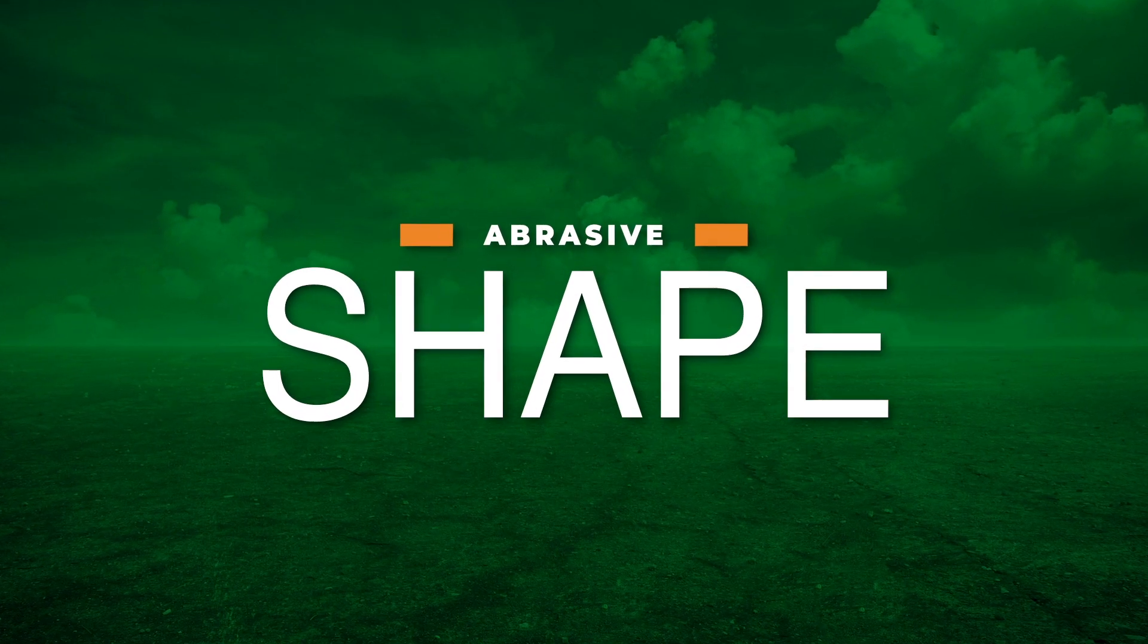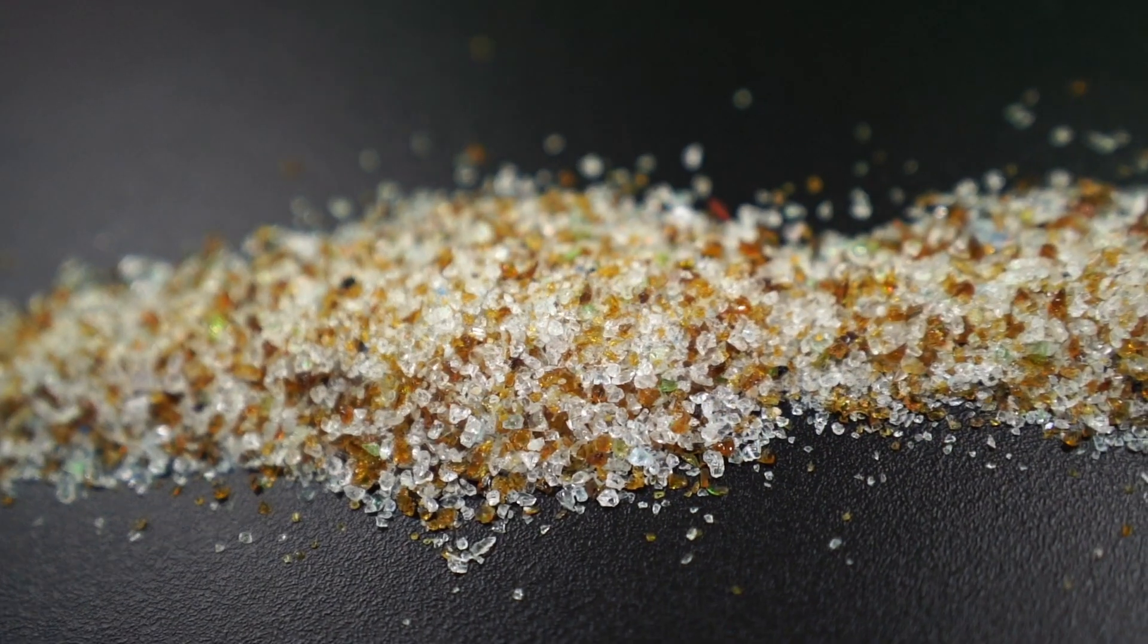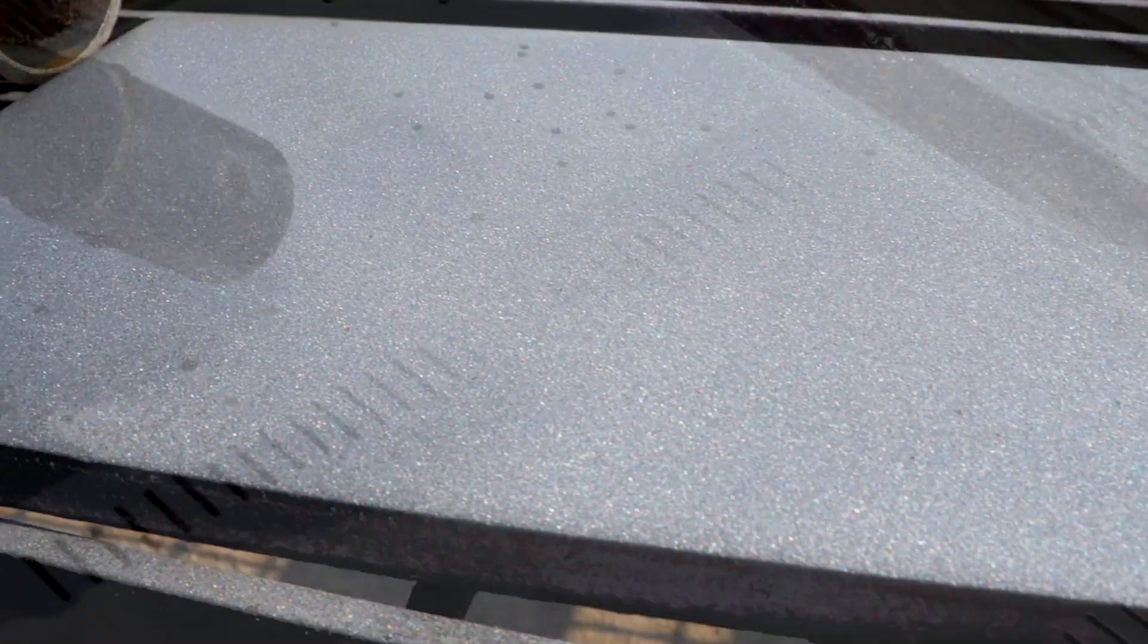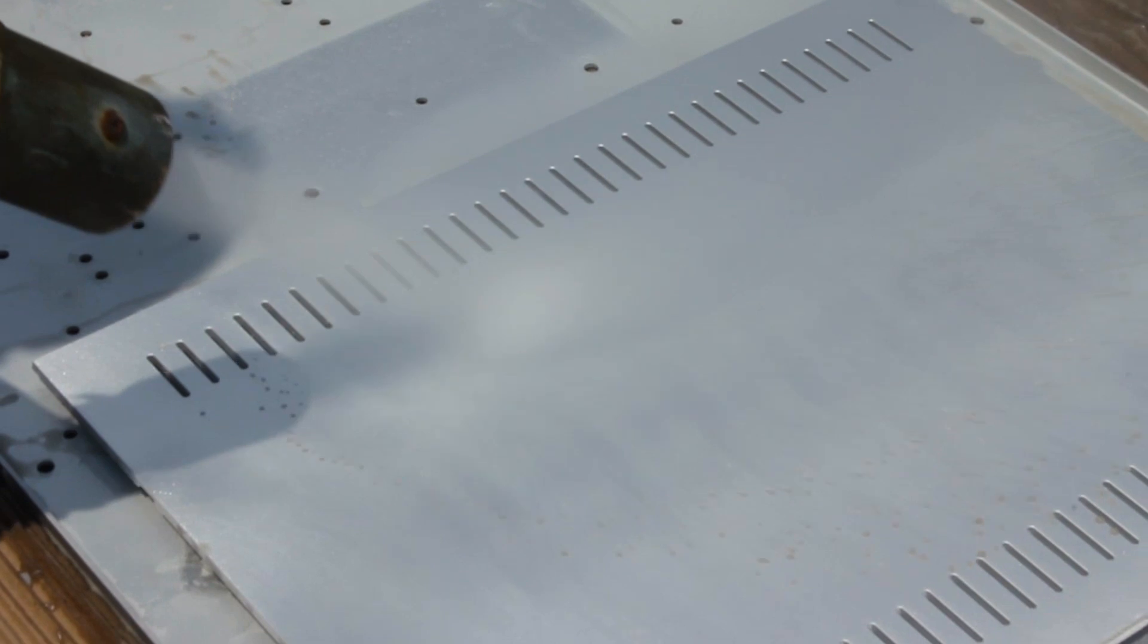The first thing to consider is shape. An angular abrasive has sharp edges that will cut into the surface, leaving a better profile for paint to grip onto. On the other hand, a round abrasive is smooth and will leave a more polished finish.